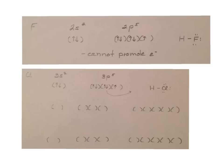Similarly, if we look at fluorine, 2s2, 2p5, one unpaired electron, one bond, three lone pairs. Cannot promote electrons, so that's all that fluorine can do.